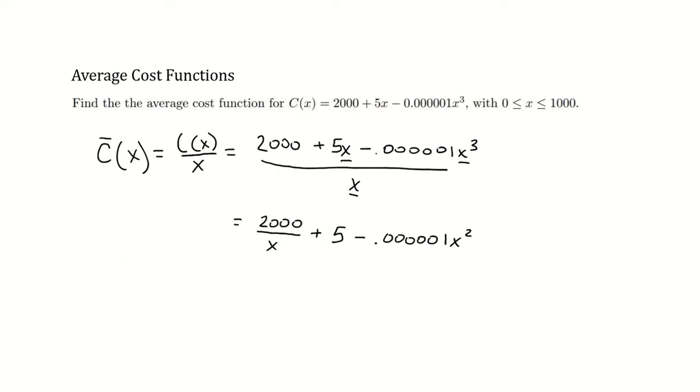So this is our average cost function. If we wanted to find the average cost of purchasing 1000 of whatever our object is, then we would plug in 1000 for x.